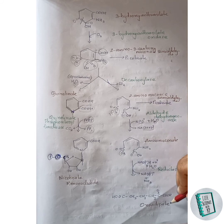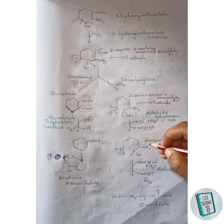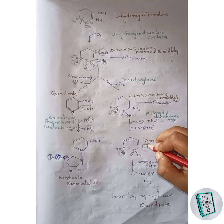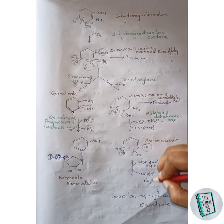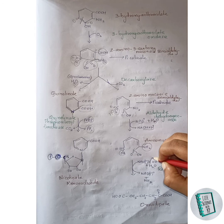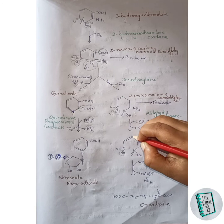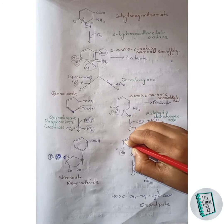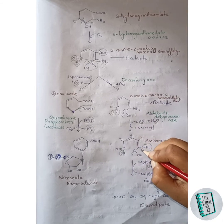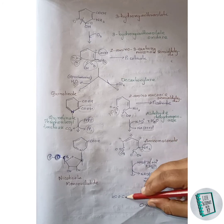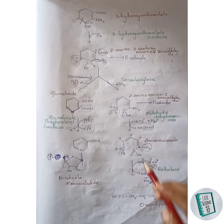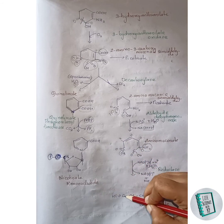Aminomuconate then in the presence of reductase enzyme forms oxoadipate. NH3 is released: the NH2 group along with a hydrogen from water is released as NH3. One hydrogen of NADPH attaches to one carbon, the remaining hydrogen of water attaches to another carbon, and the oxygen of water forms a double bond with another carbon. Thus oxoadipate is formed.